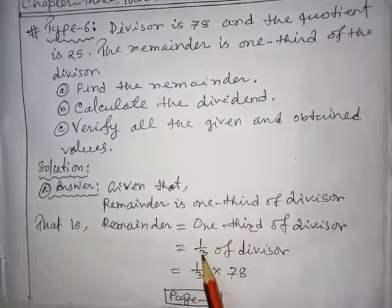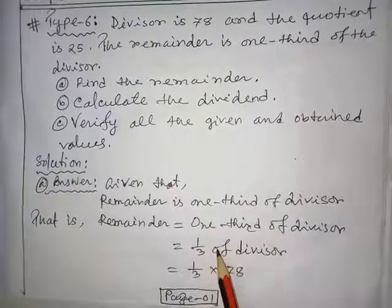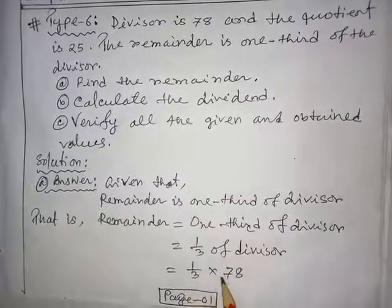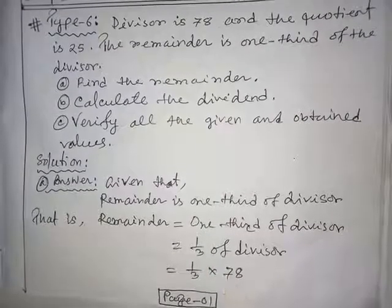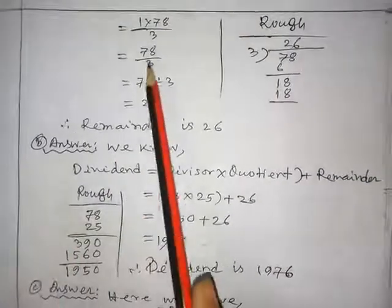Now, one-third means one out of three, that is one divided by three, of divisor. And we know 'of' means multiplication. So, the whole thing will be changed into one by three multiplied by 78.